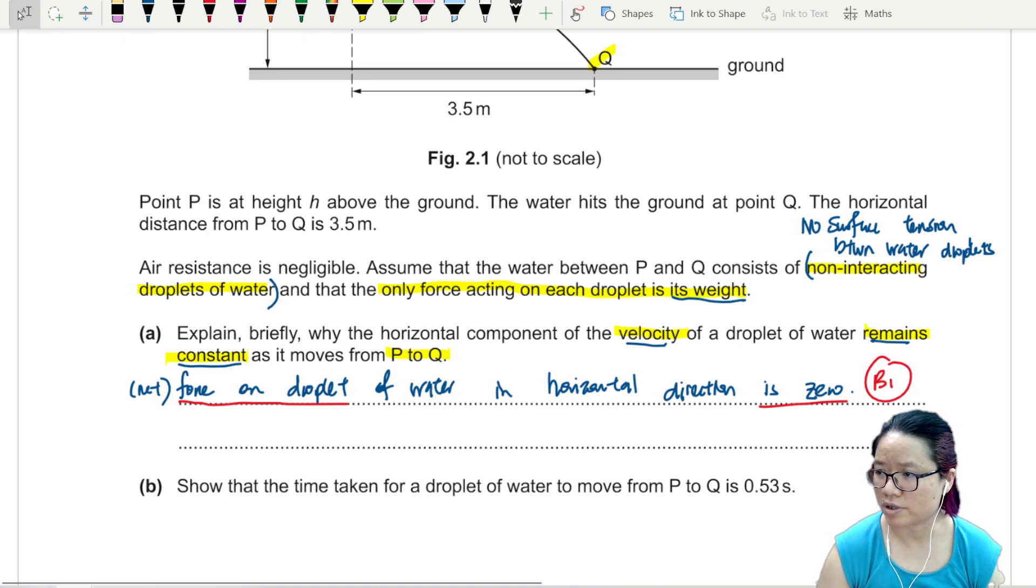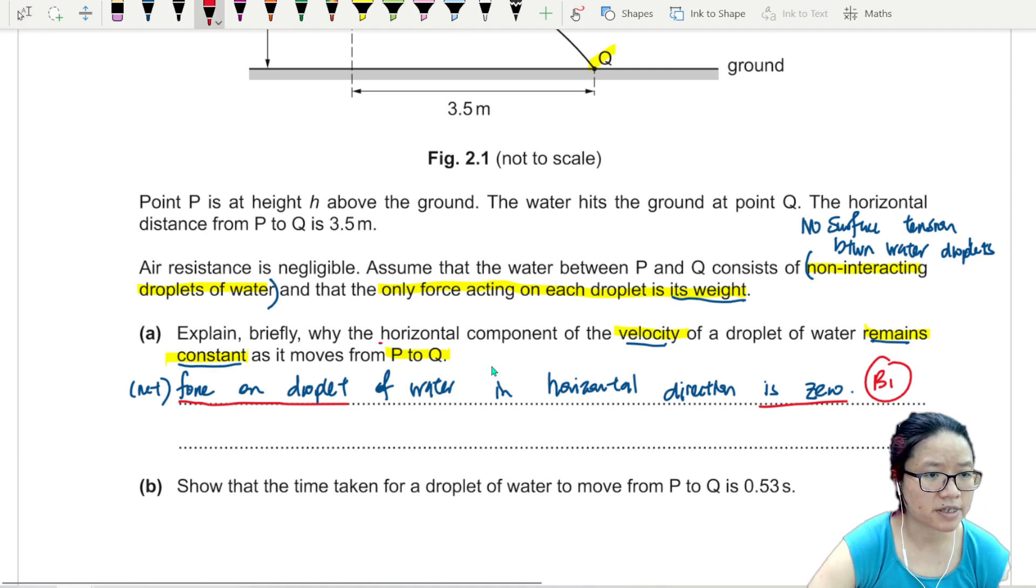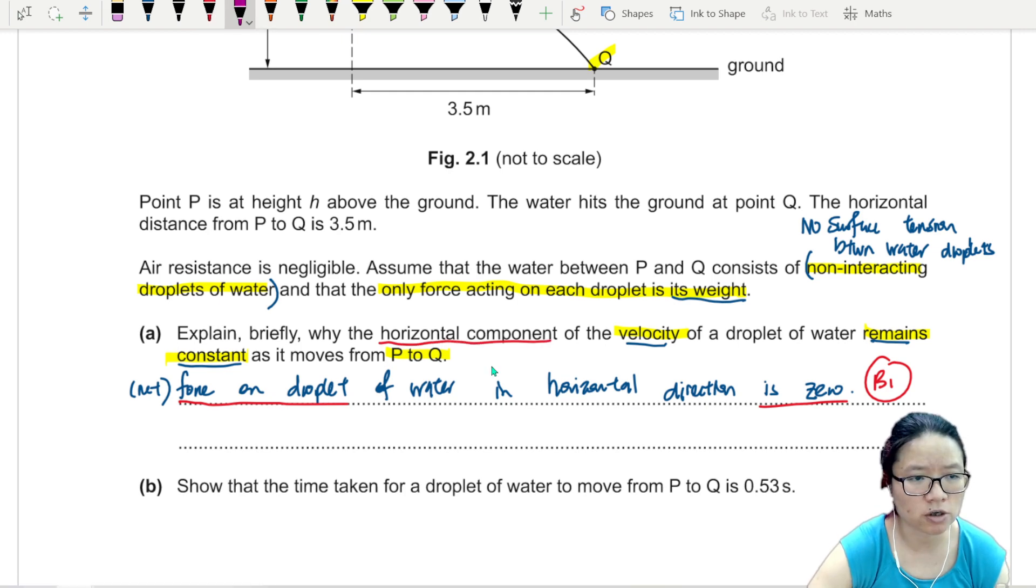You can say no resultant horizontal force. All this is okay. Try to stick to what they're saying. If they say horizontal component, you also talk about horizontal force in the horizontal direction. They say horizontal, we also say horizontal. There are other statements that can give a few marks, but we are not sure about it. So this is still the safest one.